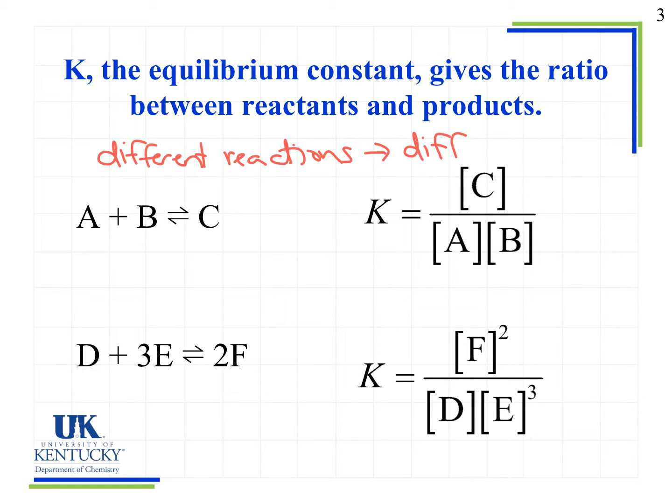But for that particular reaction under a set of conditions, the value of K will be constant. For example, if I was looking at the reaction represented here, A plus B going to C, notice I have my equilibrium arrows, which indicates the reaction is going in both directions. We could calculate the value of K, and this is the expression, which we're not going to look at quantitatively, but we could set up an expression to calculate K.